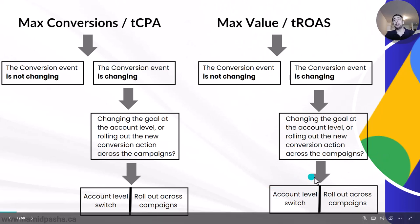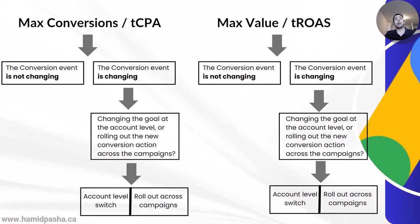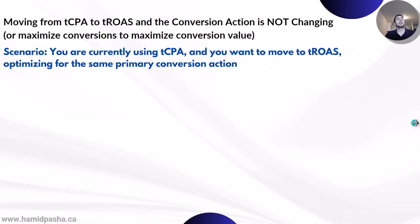You need to make a decision whether you change the goal at the account level or roll out the new conversion action across campaigns gradually, and then make an account level switch or rollout across campaigns. We are going to review all these scenarios together. The first scenario would be moving from target CPA to target ROAS where the conversion action is not changing. You are currently using target CPA and you want to move to target ROAS, optimizing for the same primary conversion action.